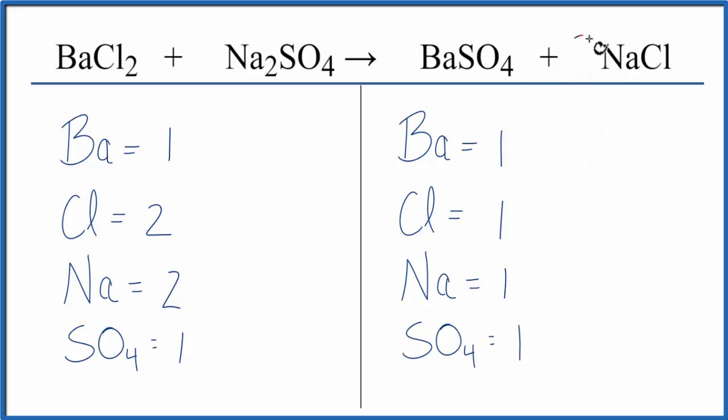We can do that by putting a coefficient of two in front of the NaCl, and this two applies to everything here. So we have 1Na times two, that gives us two, the sodium atoms are balanced.